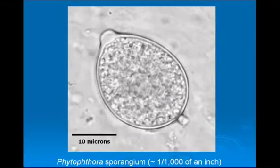Phytophthora sporangia are generally quite distinctive — they sort of look lemon-shaped. These behave a little differently than Pythium. With Phytophthora, the zoospores develop inside the sporangium, and when they're all developed they're released. We'll see a short video of that as well.